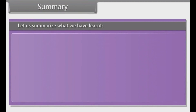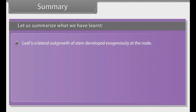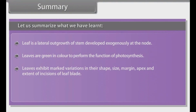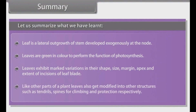Summary. Leaf is a lateral outgrowth of the stem developed exogenously at the node. Leaves are green in color to perform the function of photosynthesis. Leaves exhibit marked variations in their shape, size, margin, apex and extent of incisions of the leaf blade. Like other parts of a plant, leaves also get modified into other structures such as tendrils and spines for climbing and protection respectively.